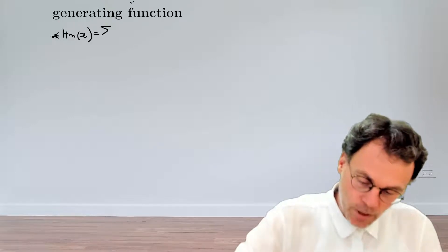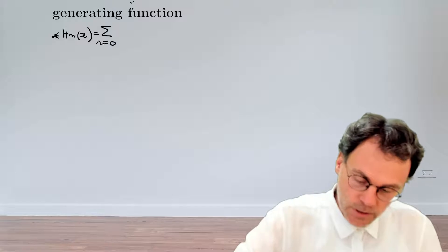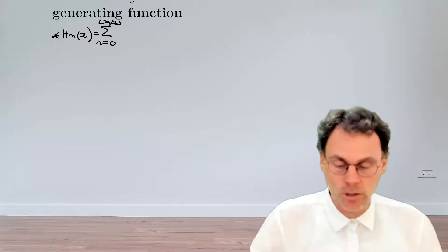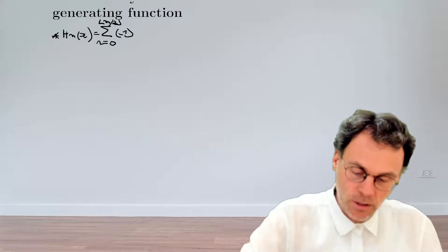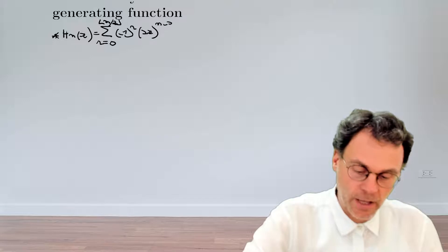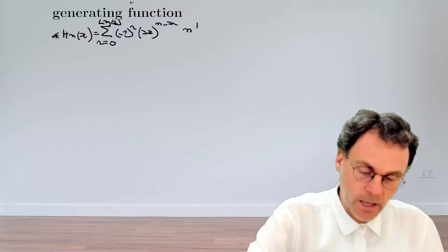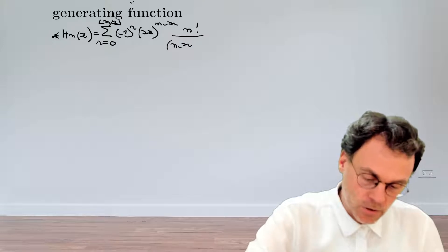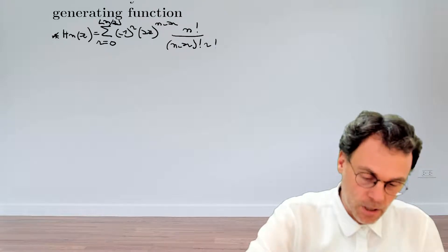So this is a sum of r going from 0 to n over 2, the sum of minus 1 to the power of r, 2x to the power of n minus 2r, and then n factorial divided by n minus 2r factorial times r factorial.